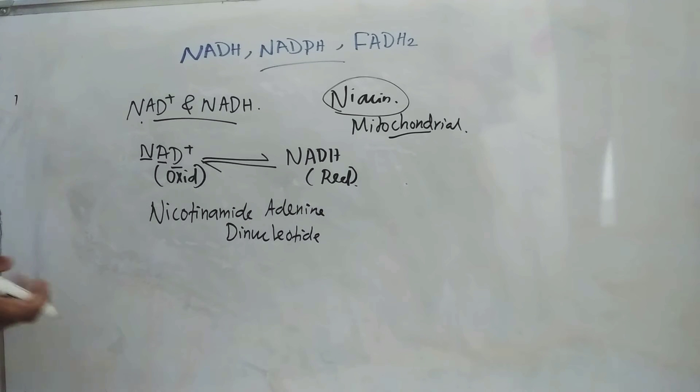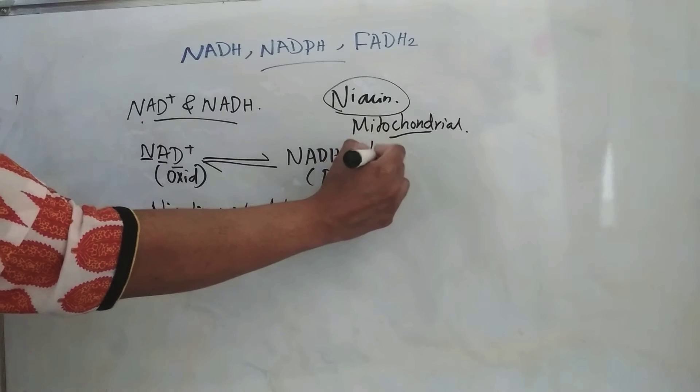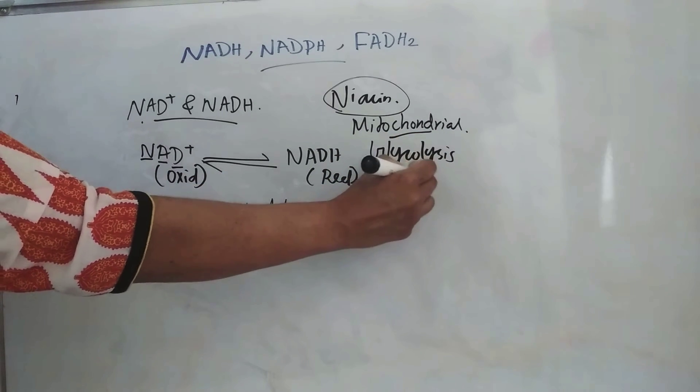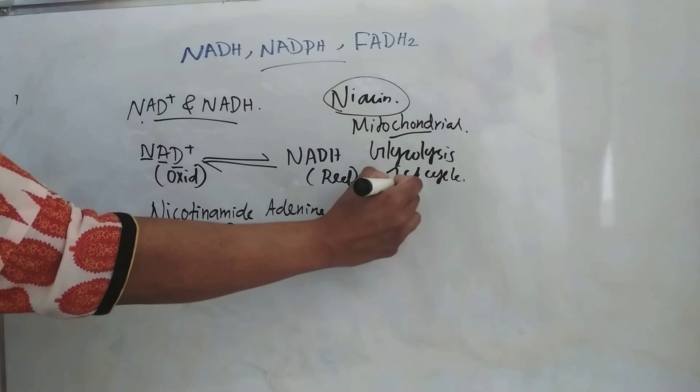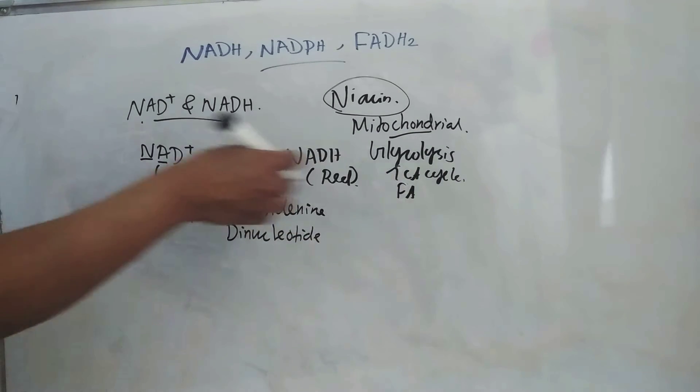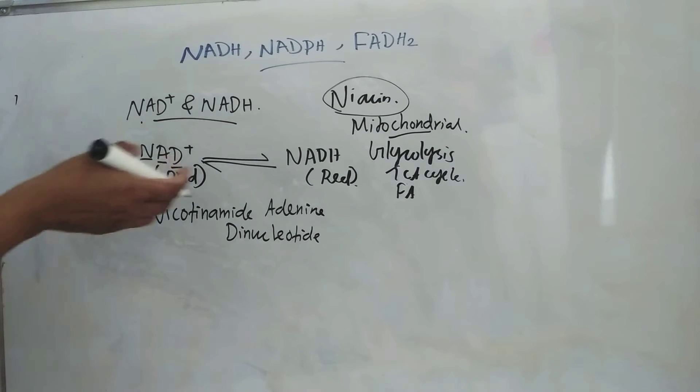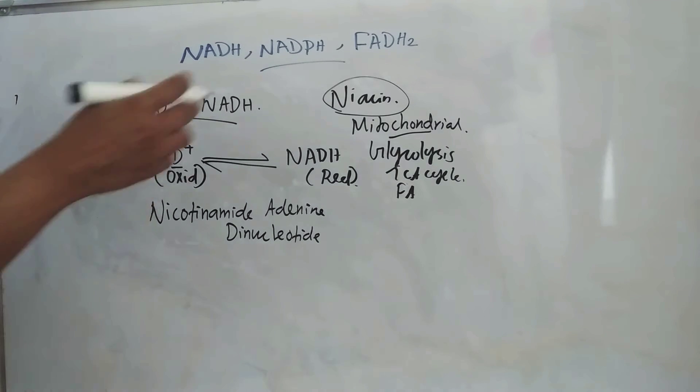We have numerous sources of this NADH in our body like glycolysis, then TCA cycle, then fatty acid oxidation that is beta oxidation reaction, etc. These are the main sources of this NADH in our body.